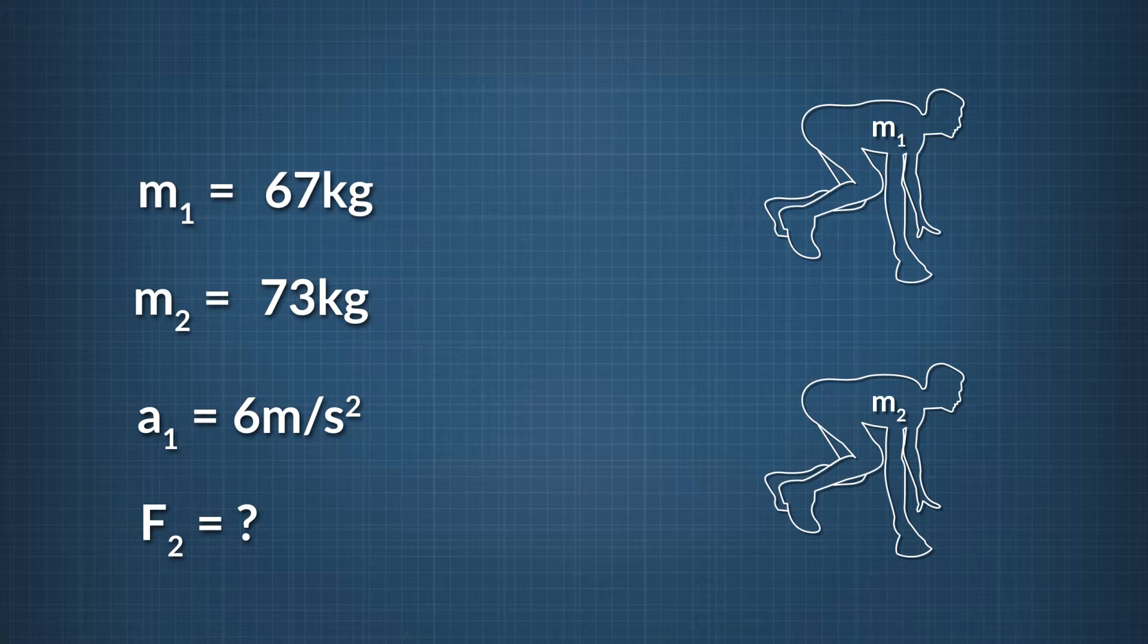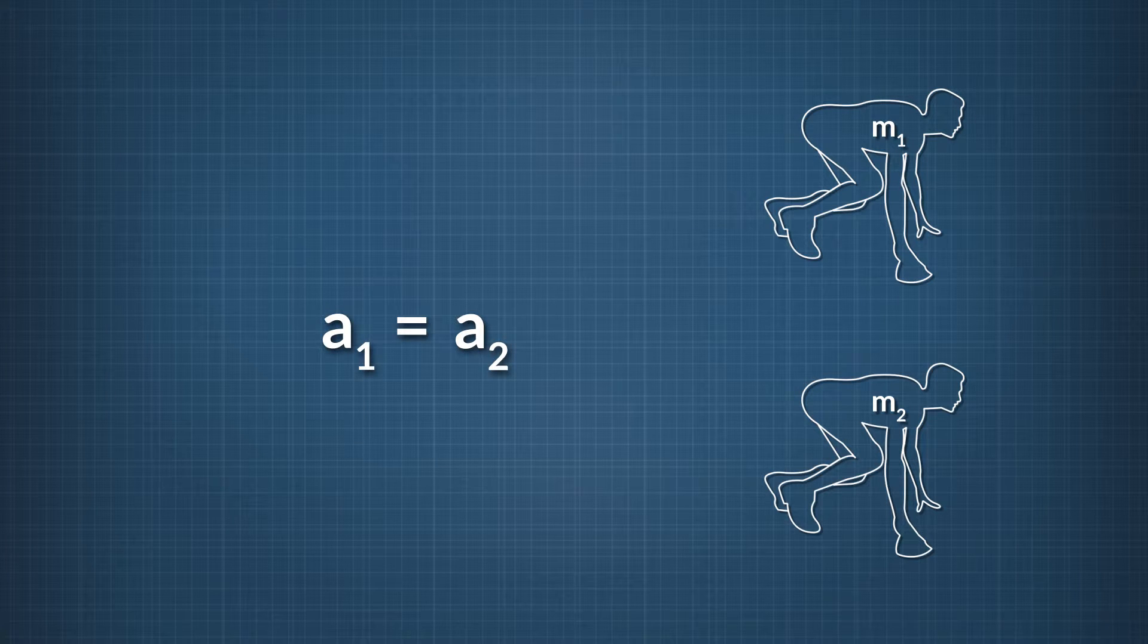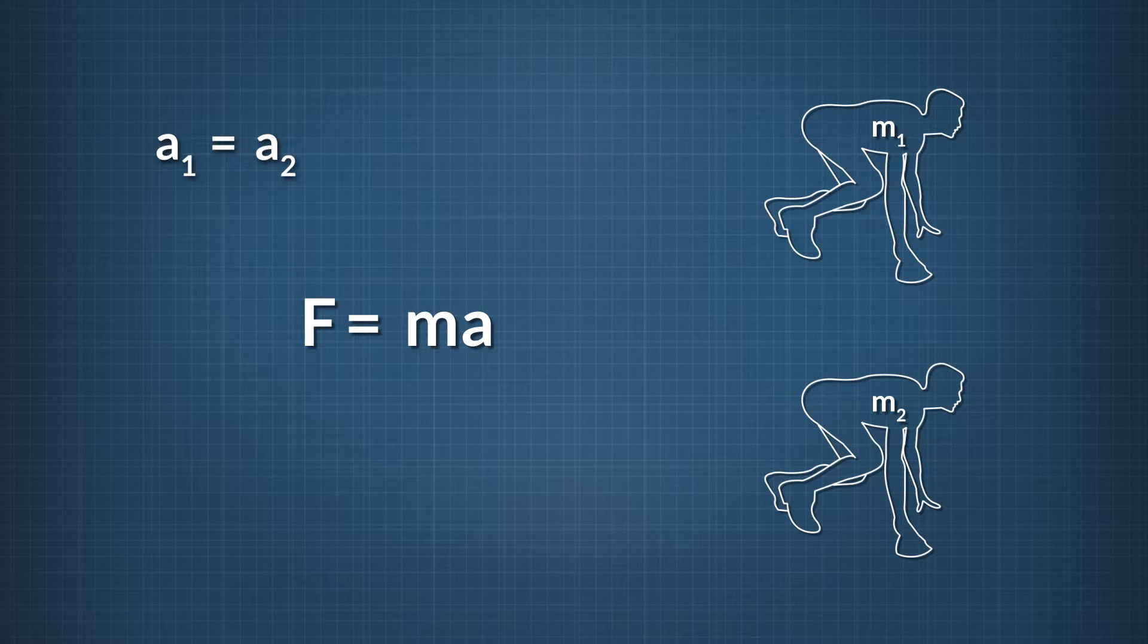We have two different runners, and we want to match their acceleration at the start of the race. Written as an equation, we say that the acceleration of runner 1 equals the acceleration of runner 2. By Newton's second law, force equals mass times acceleration.